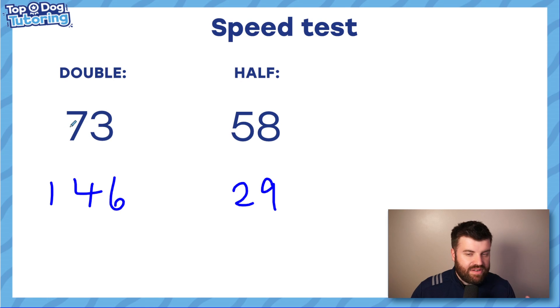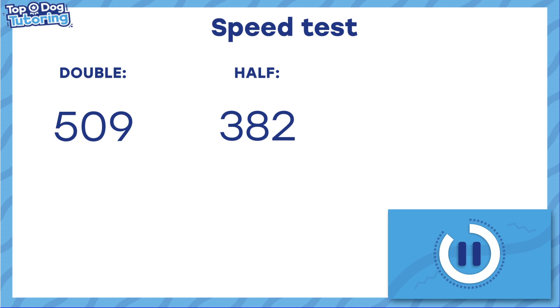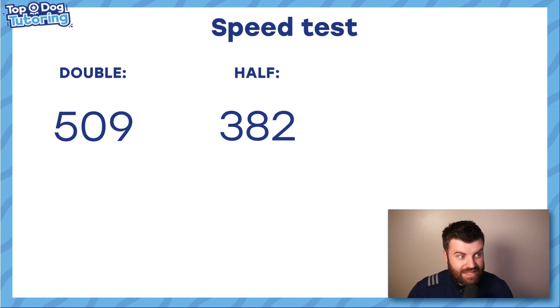Here you could double 70 and get 140. Double 3 and get 6. Over here you can half 50 get 25. Super quick. Speed test. Go.